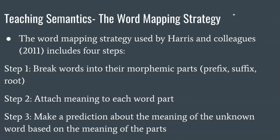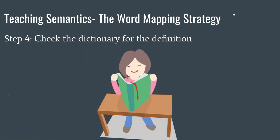Also, semantic mapping — looking at relationships: what's the key word, what is the main thing connected to, what class of things is it? The word mapping strategy used by Harris and colleagues has four steps: break words into their morphemic parts — prefix, suffix, root; attach meaning to each word part; make a prediction about the meaning of the unknown word based on the meaning of the parts; and then check the dictionary for the definition.